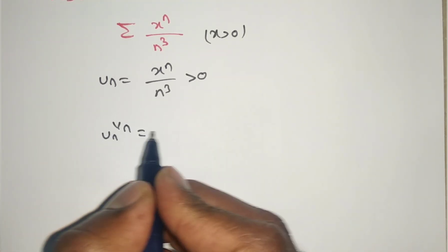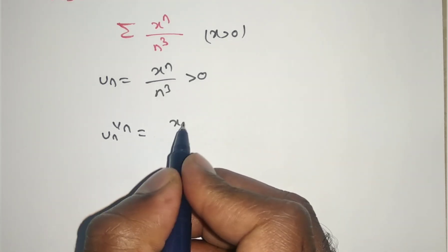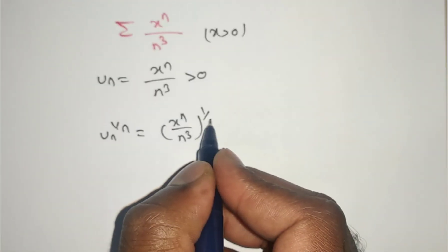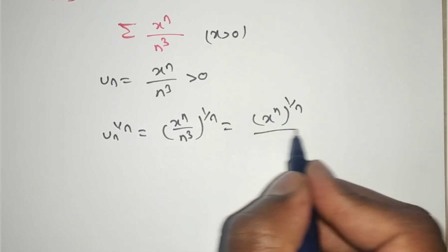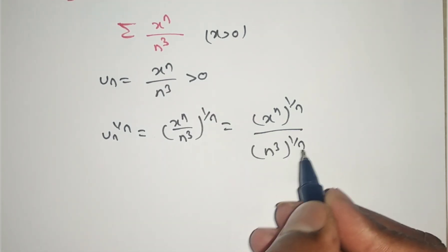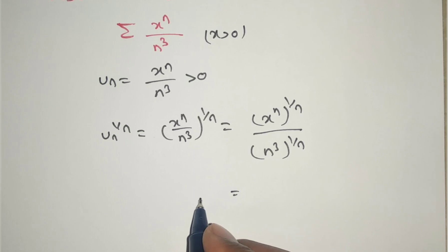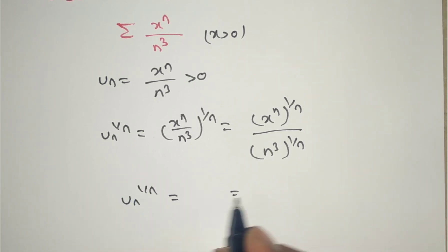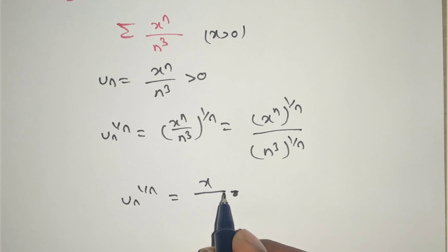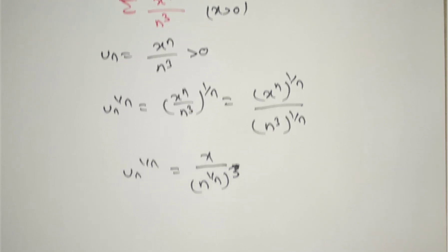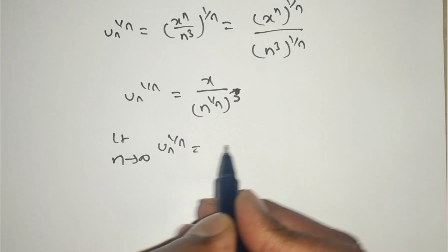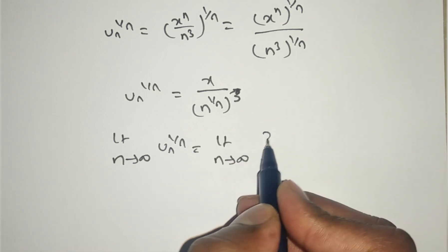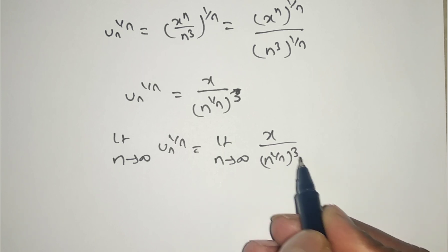Taking the nth root of both sides: (xⁿ/n³)^(1/n) = (xⁿ)^(1/n) / (n³)^(1/n). The power n and 1/n cancel in the numerator. So uₙ^(1/n) = x / (n^(1/n))³.